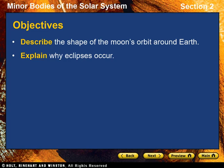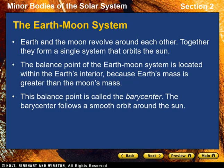At the end of this video, you should be able to describe the shape of the moon's orbit around Earth and explain why eclipses occur. Chapter 28, Section 2: Movements of the Moon.